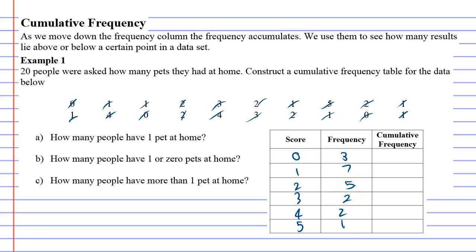Now the cumulative frequency - if you think of the word to accumulate something, that's what we're talking about. To accumulate means to add on to things. The first one is 3, the same as the frequency. Then we add on the 7. 3 plus 7 is 10.